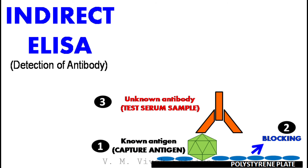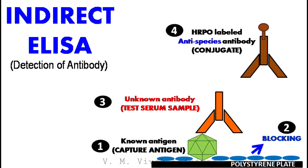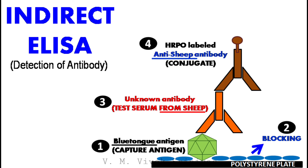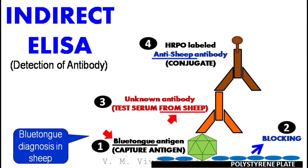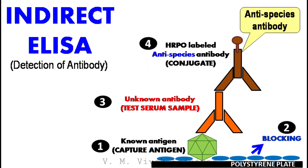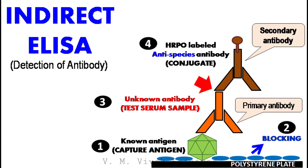Then, after incubation and washing, a known HRPO-labeled anti-species antibody is added to bind to this test antibody. For example, if the test serum is collected from sheep for bluetongue diagnosis, then a known HRPO-labeled anti-sheep antibody is used. If the test serum is collected from human for brucella diagnosis, then a known HRPO-labeled anti-human antibody is used. That is, these antibodies used for detection are species-specific. Since these antibodies are not in direct contact or interaction with the antigen, they are considered as secondary antibody.